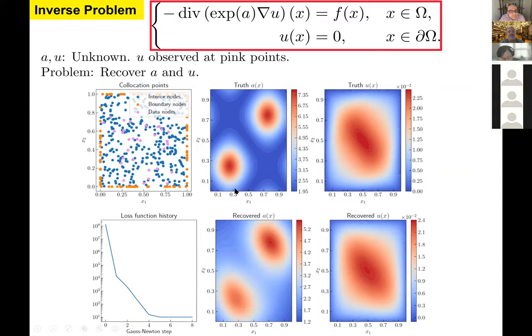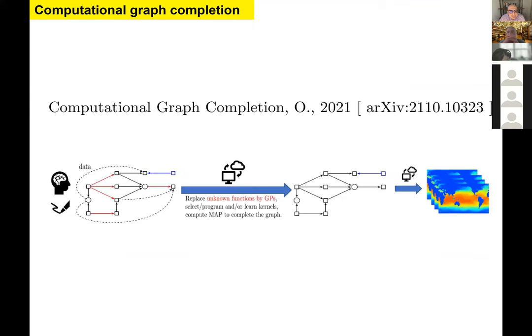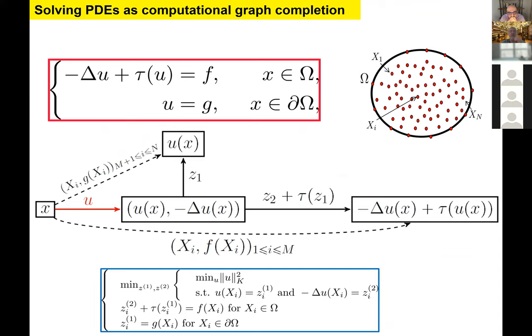My next step is to show that the proposed method can be seen as part of a larger framework: completing computational graphs with Gaussian processes. Solving a PDE can be expressed as completing a computational graph, where nodes represent variables and edges represent functions — unknown functions colored in red and known functions in black. For the nonlinear elliptic PDE example, u maps a point x to the vector (u(x), -Δu(x)), which is then mapped to the right-hand side by a known function representing the PDE structure.